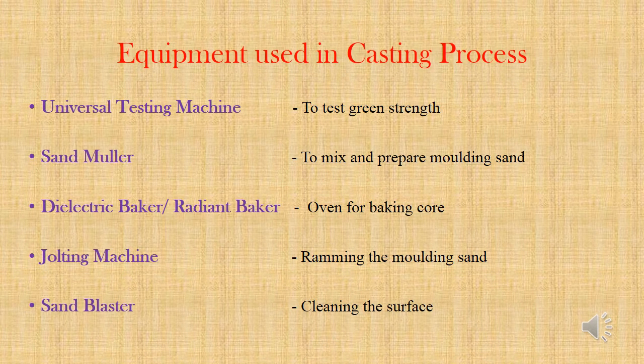Now we are going to see the important equipment used in the casting process. First is the universal testing machine, used for testing the green strength of the molding sand. Next is the sand muller, which is like a grinder to mix and prepare molding sand. Next is the dielectric packer, which is like an oven for packing the core, giving dry strength to the core. Next is the jolting machine, used for ramming the molding sand uniformly. Finally, the sand blaster is used after producing the casting for cleaning the surface of the casting.